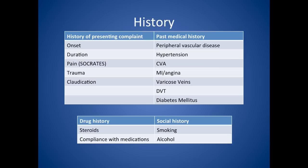Now looking at history, and in particular the history of presenting complaint. You would want to ask about onset and duration — how long has the ulcer been there. Also ask the patient about pain, which is quite important, and you can use the SOCRATES mnemonic for that. You might want to ask about trauma, and if you suspect peripheral vascular disease, ask about claudication distance.